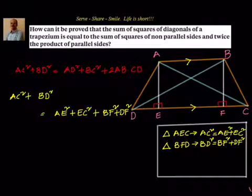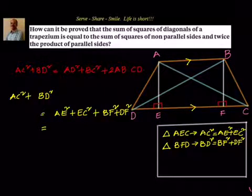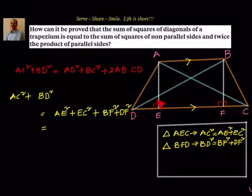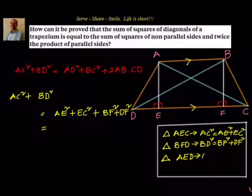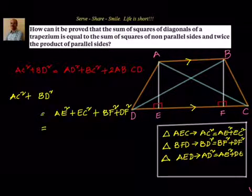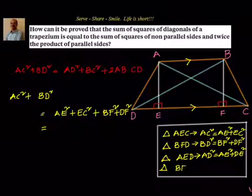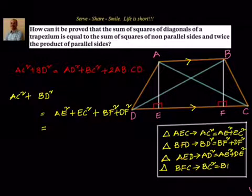Now we have AE² but we are interested in AD. We see that AD is the hypotenuse of right-angle triangle AED, so from triangle AED: AD² = AE² + DE², which gives AE² = AD² − DE². Similarly, on the right side, from triangle BFC: BC² = BF² + FC², giving BF² = BC² − CF².